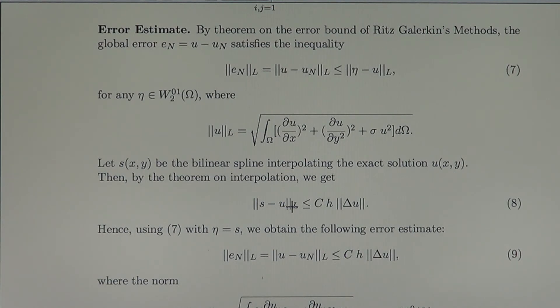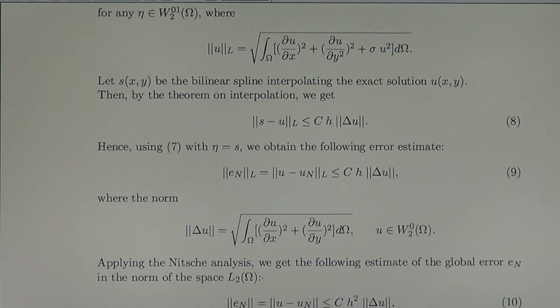But this error of interpolation, as we know from the part of the lecture when we considered the error of interpolation by bilinear spline in the L-norm, is constant C times H times the norm of the Laplacian. Using inequality 7 with eta equals S as we have said, we obtain the following error estimate. This error is less or equal than this, so we can have error estimate by that form, that value.